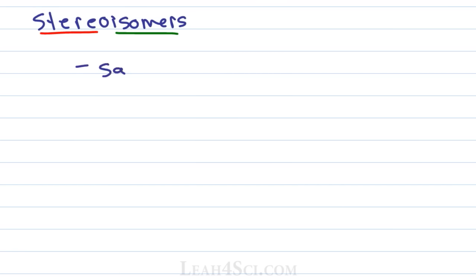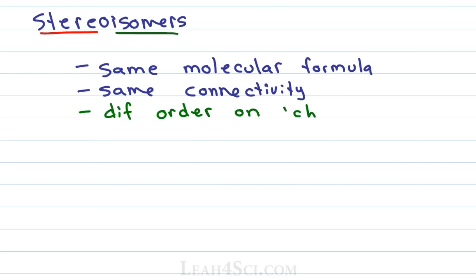And the stereo portion tells you that you have the same molecular formula, same connectivity meaning the order of atoms but the difference is their specific orientation in space meaning where they're locked into. Now this can include cis-trans isomers over a double bond or a ring or stereoisomers which I think of as chiral isomers, R and S.